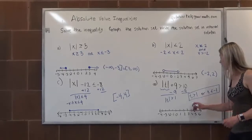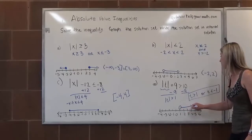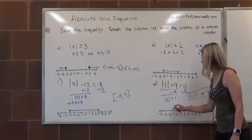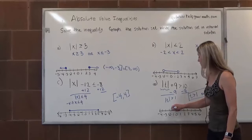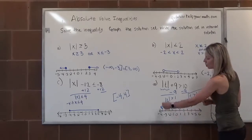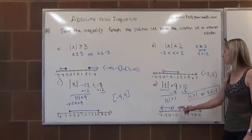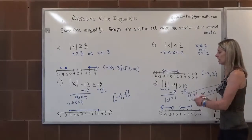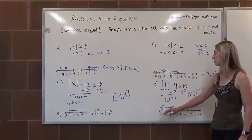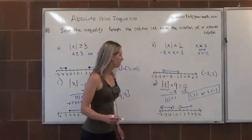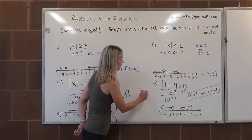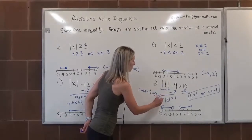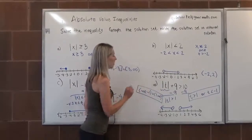When we graph it, T is greater than 1: open circle over 1 with an arrow going to the right, representing 2, 3, 4, 5, etc. Or T is less than negative 1: open circle on negative 1 with an arrow going to the left, indicating negative 2, negative 3, negative 4, and so on. In interval notation, mirroring the graph from least to greatest, we write from negative infinity to negative 1 using a parenthesis, then 'or,' then from 1 to infinity using a parenthesis.